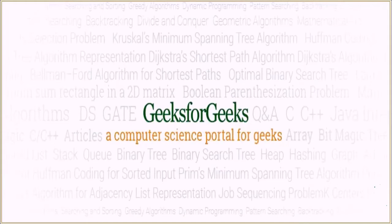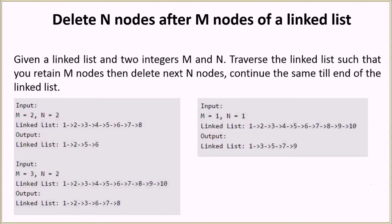Hello everyone and welcome to Geeks for Geeks. Today the problem which we are going to see is to delete n nodes after m nodes of a linked list. In this problem you will be given two integers m and n, and we have to traverse the linked list such that we retain m nodes and then delete the next n nodes. Then we again retain the next m nodes, then we delete the next n nodes, and we continue till the end of the linked list.